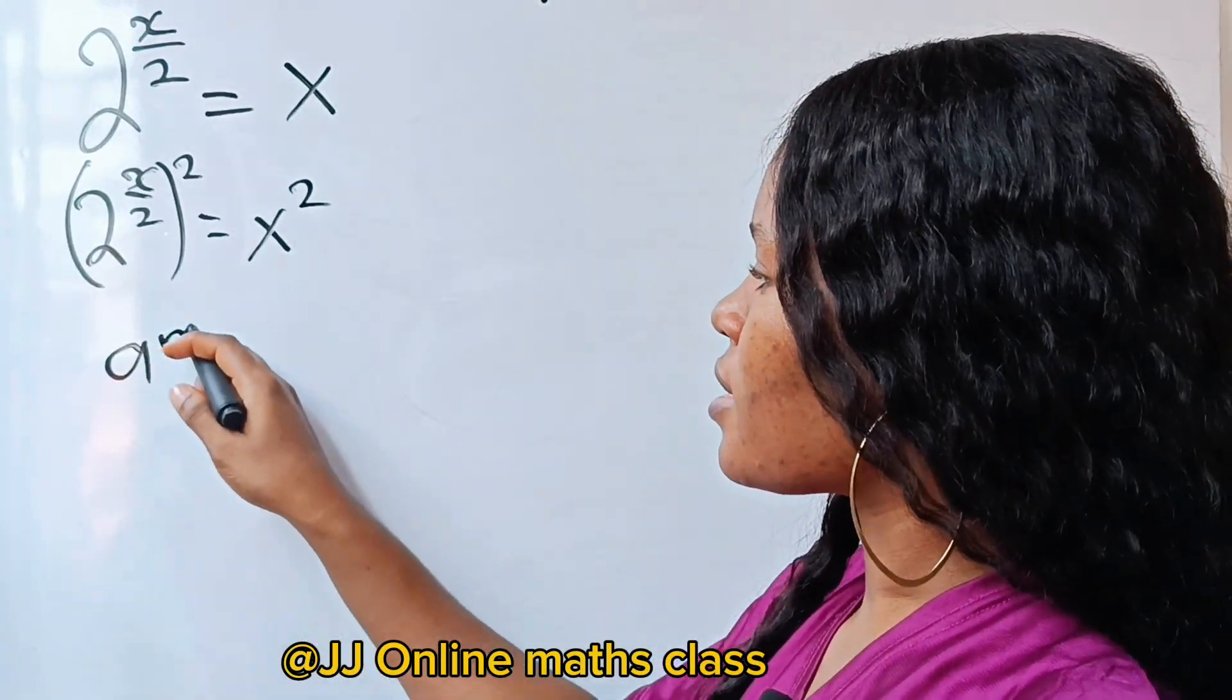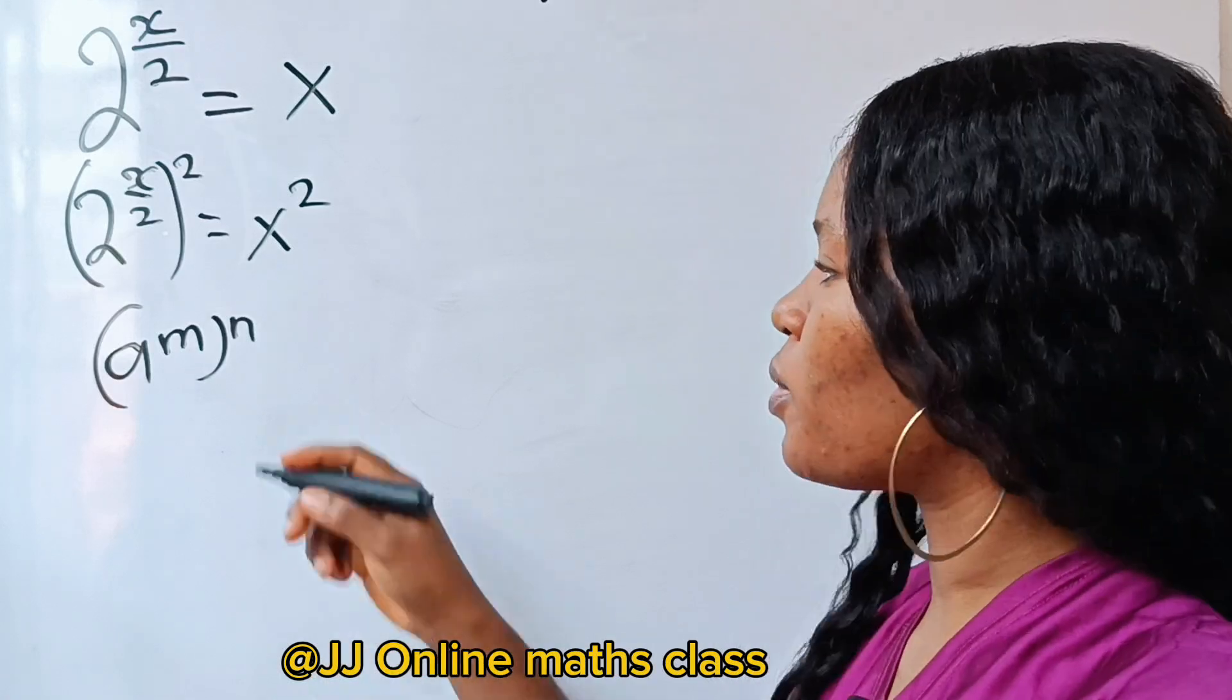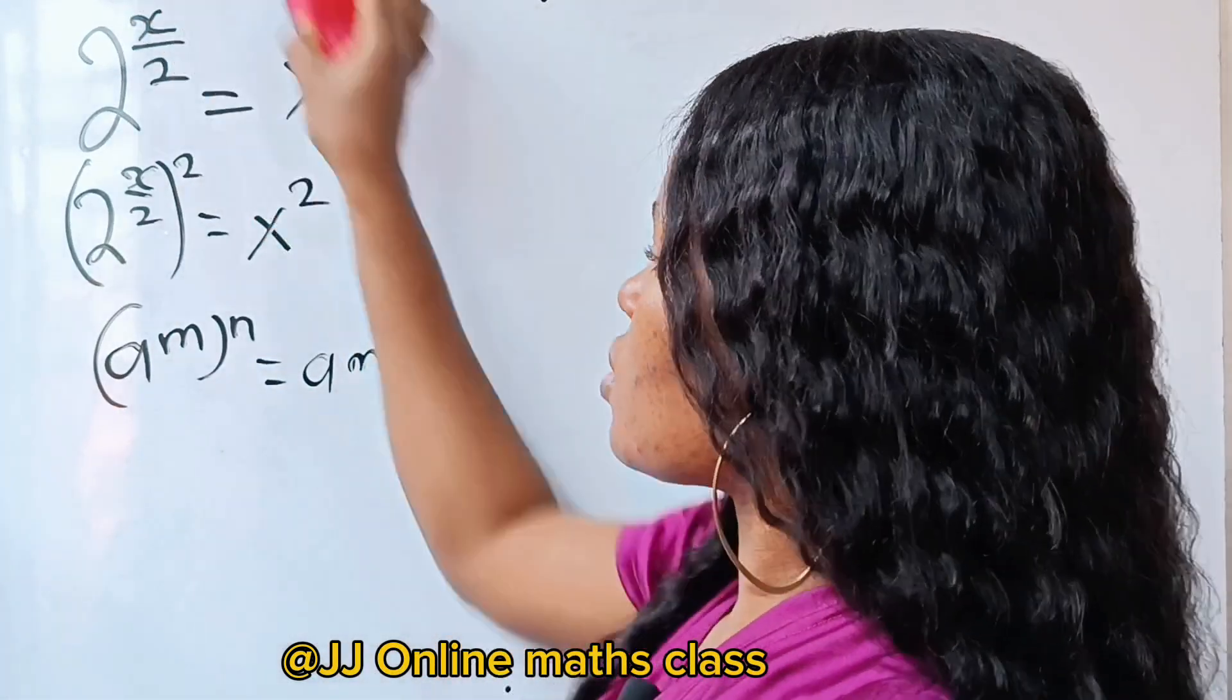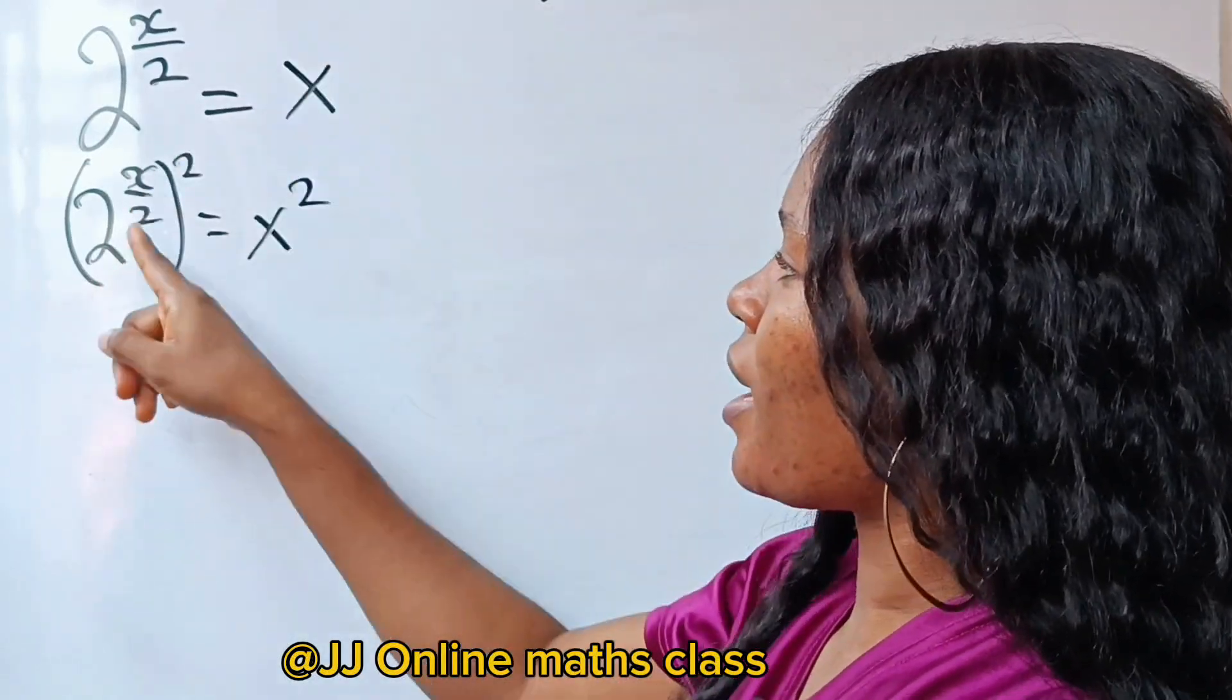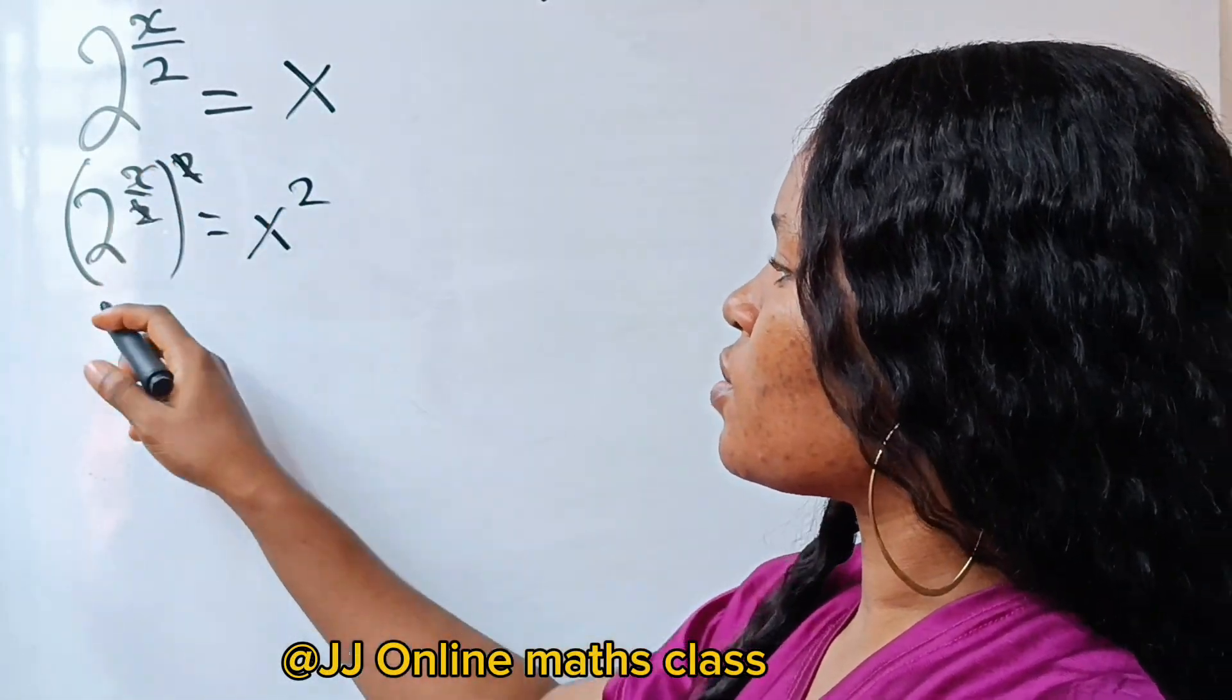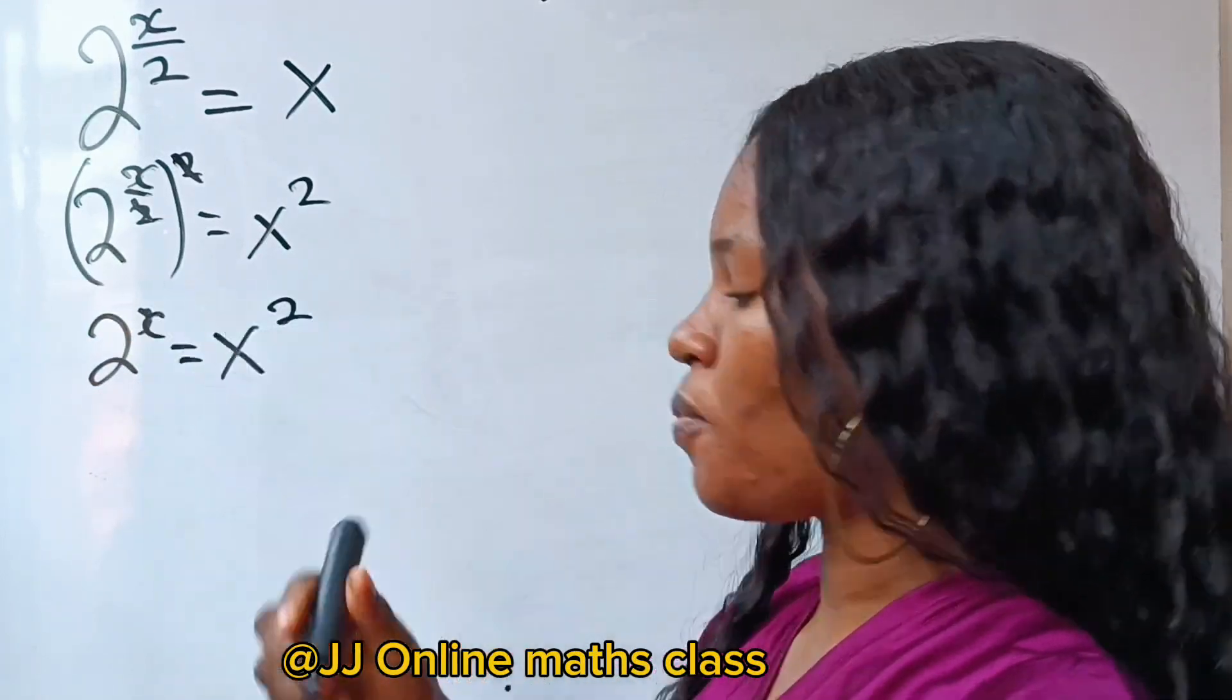Then recall that a to the power of m raised to the power of n according to the law of exponents is equal to a to the power of m times n. So if we should multiply x over 2 by 2, this 2 is going to cancel these 2. So we are left with 2 to the power of x is equal to x to the power of 2.